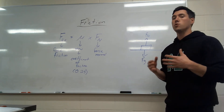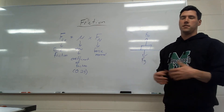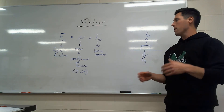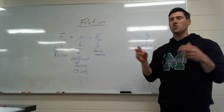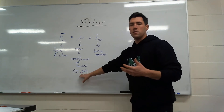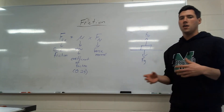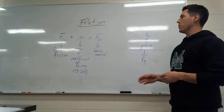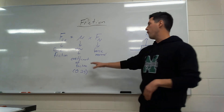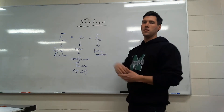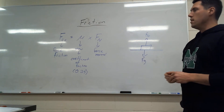Rubber shoes on a floor have a really high coefficient of friction, maybe 0.8 or 0.85. We can't ever reach one, because a coefficient of friction of one would mean you could never move — you'd be stuck. This decimal can basically be thought of as a percentage — 0.25 means you're taking away 25 percent of that force. That mu symbol is what you'll see from now on in physics for coefficient of friction.